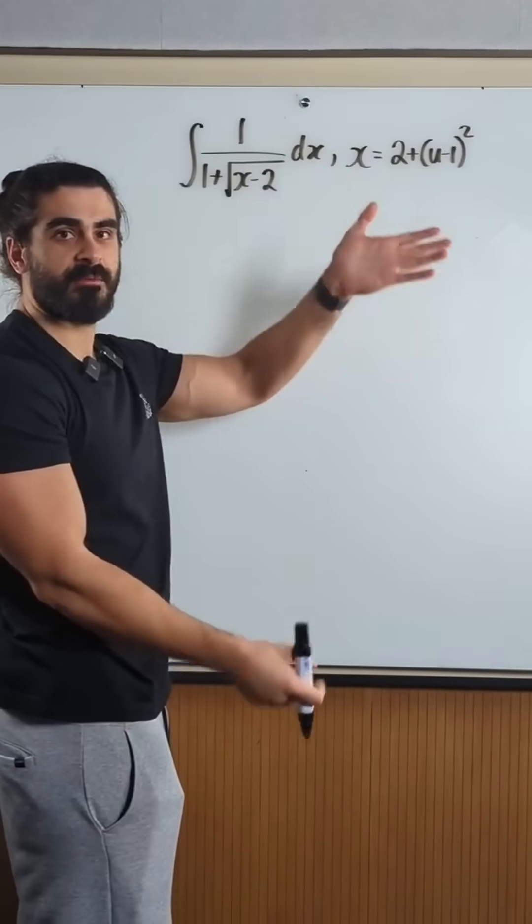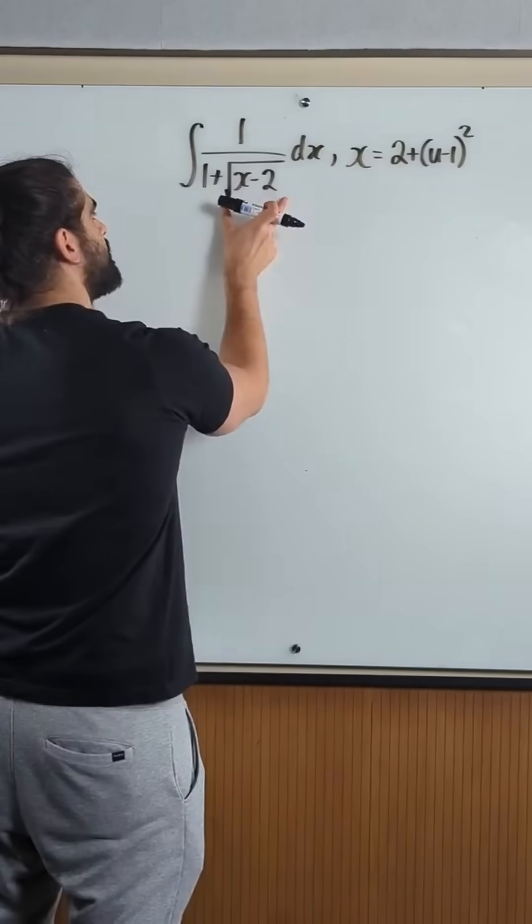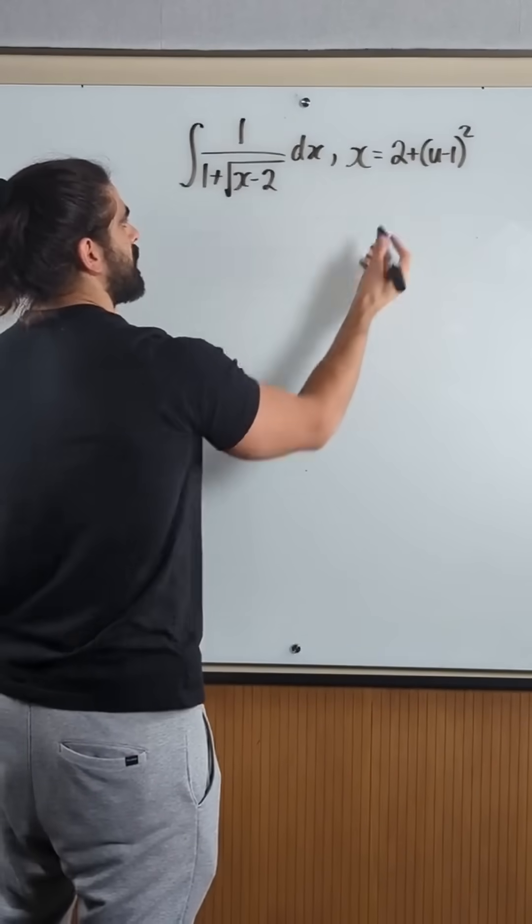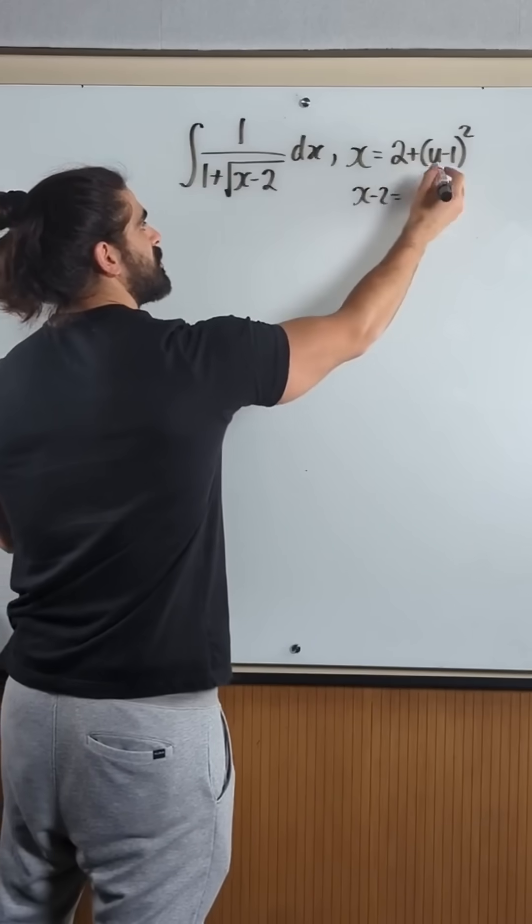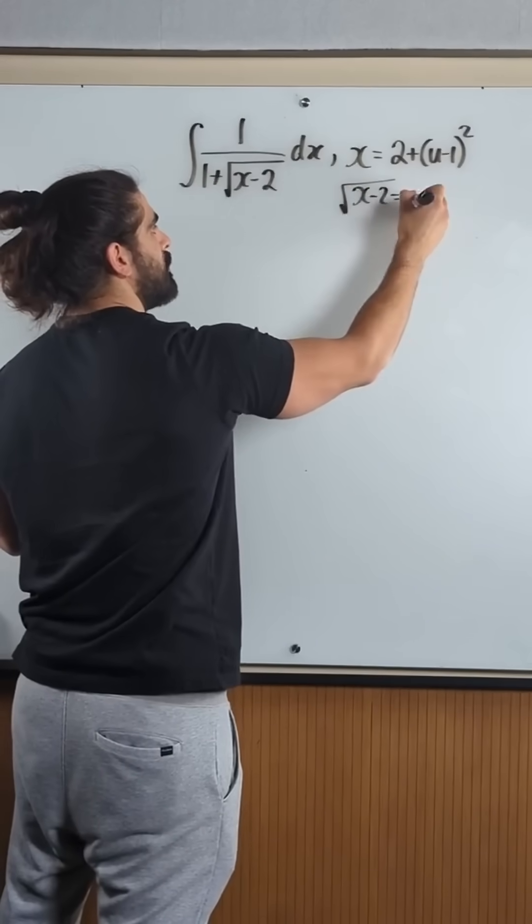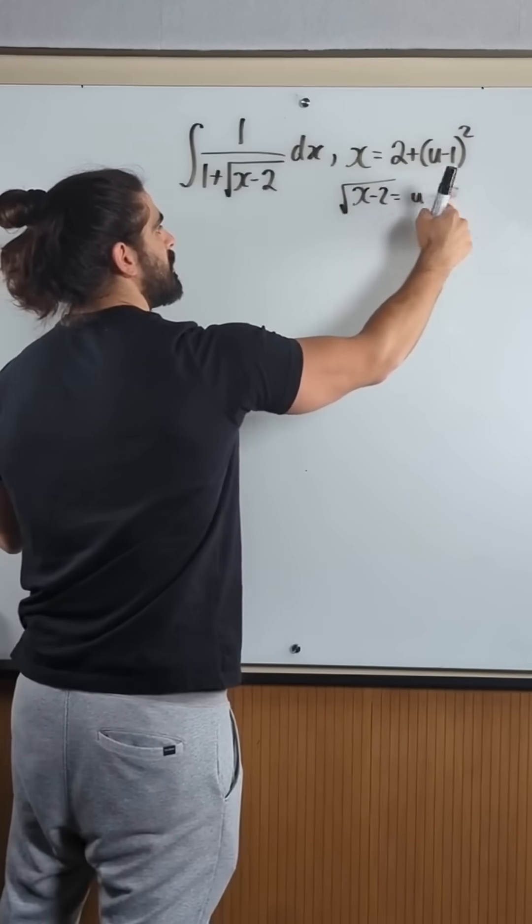Well, they give you these for a reason, probably to get rid of this denominator, but double check, right? So subtract the 2. x minus 2 is u minus 1 squared, so you root both sides, u minus 1, so then you add the 1.